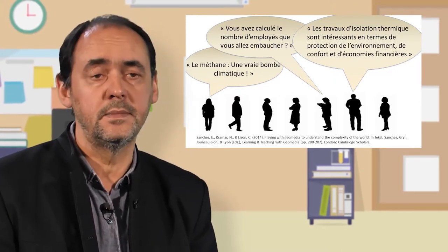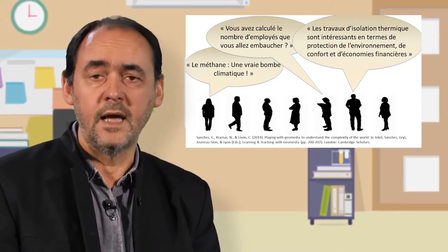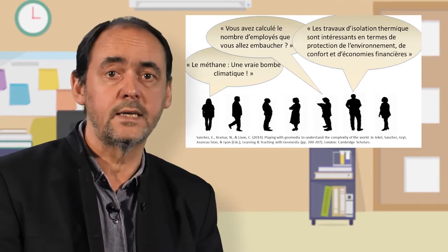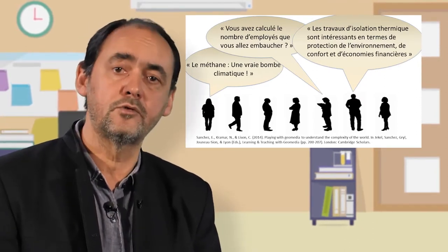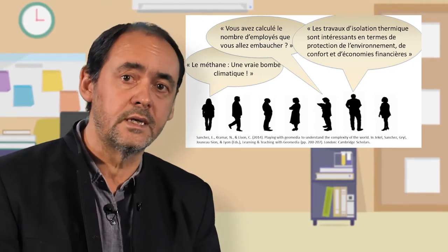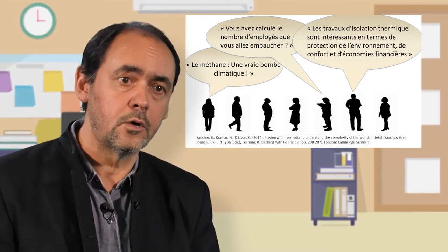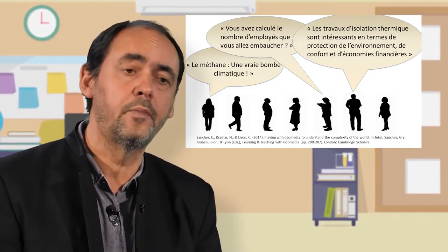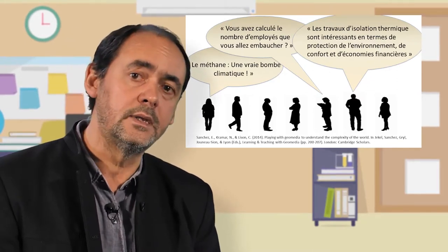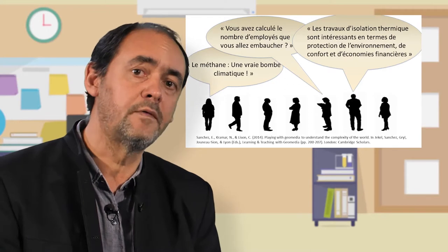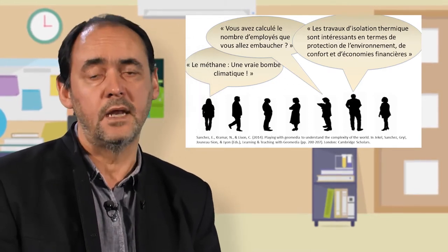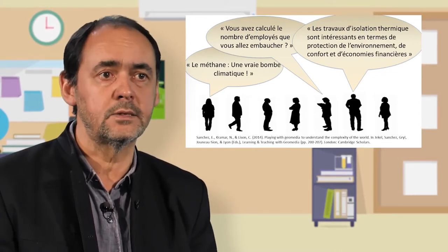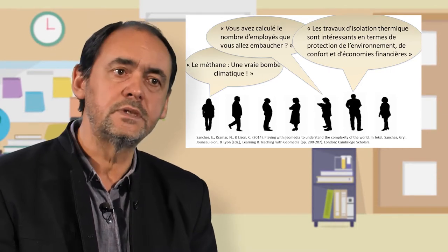À partir du verbatim des élèves, on voit qu'un élève propose une solution mais dit : « Il faut faire attention que cette solution prenne en compte la question du chômage, de l'emploi. C'est bien que l'environnement soit pris en compte, mais quels sont les impacts sociaux sur les individus ? » À la fin du jeu, on voit se développer un discours encore plus complexe, intégrant les aspects sociaux, environnementaux et économiques. Par exemple, des élèves discutent l'isolation des maisons en disant : « L'isolation thermique est intéressante pour l'environnement, mais pensons aussi au confort des personnes et aux questions économiques. »